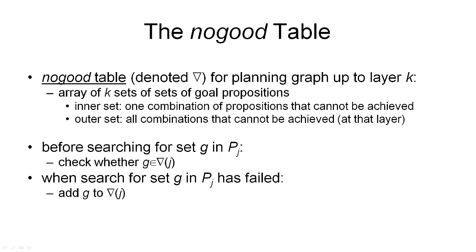And we could just throw all these nodes that we want to remember into a big hash table. But here's a more efficient data structure that helps us remember what we've seen before, the so-called nogood table. The nogood table, denoted by this symbol here that looks like an upside down triangle, or as the Greek letter nabla, is for a set of goal propositions.